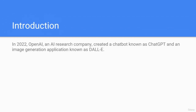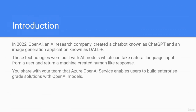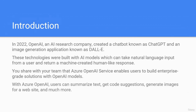In 2022, OpenAI, an AI research company, created a chatbot known as ChatGPT and an image generation application known as DALL-E. These technologies were built with AI models which can take natural language input from a user and return a machine-created, human-like response. Azure OpenAI Service enables users to build enterprise-grade solutions with OpenAI models — users can summarize text, get code suggestions, generate images for a website, and much more.